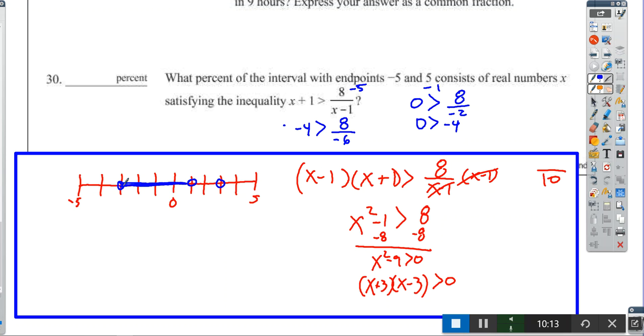Let's plug in 2. If I plug in 2, I'll get 2 + 1 = 3 is greater than 8 over 1. That is false. So I know that everything in this region will not work.